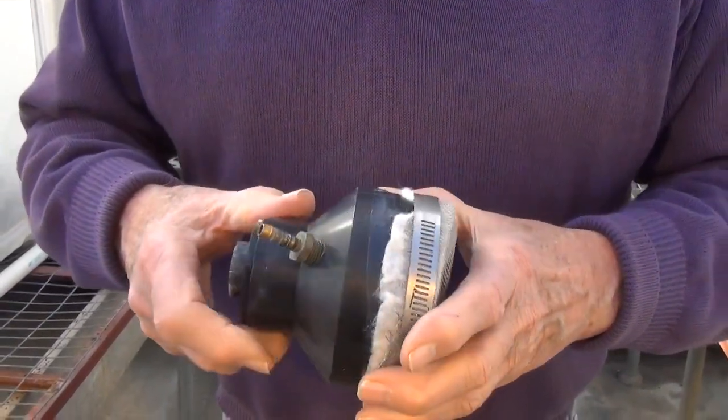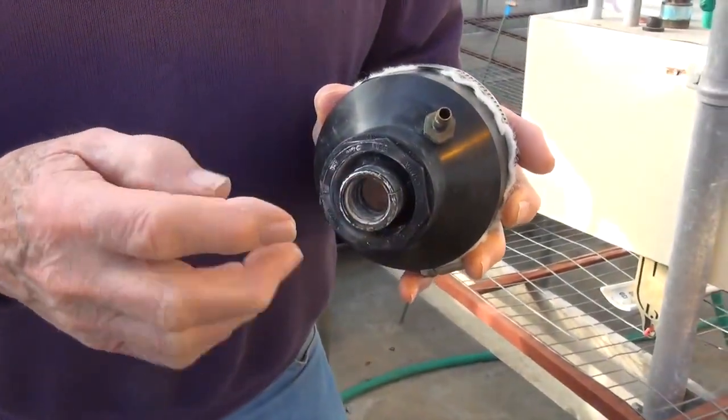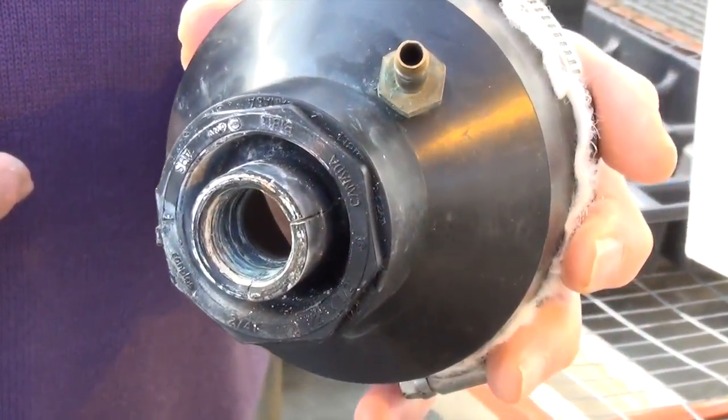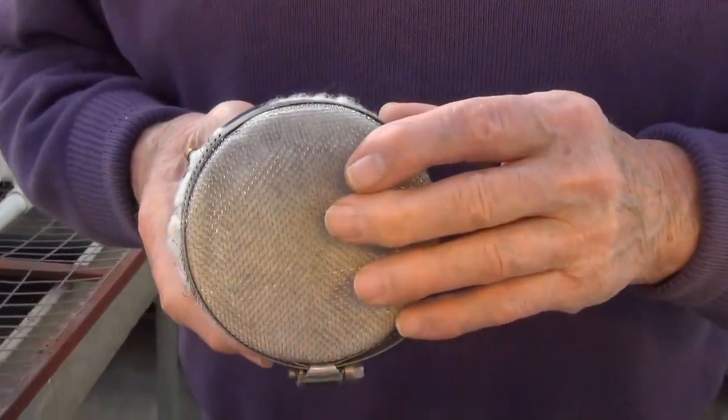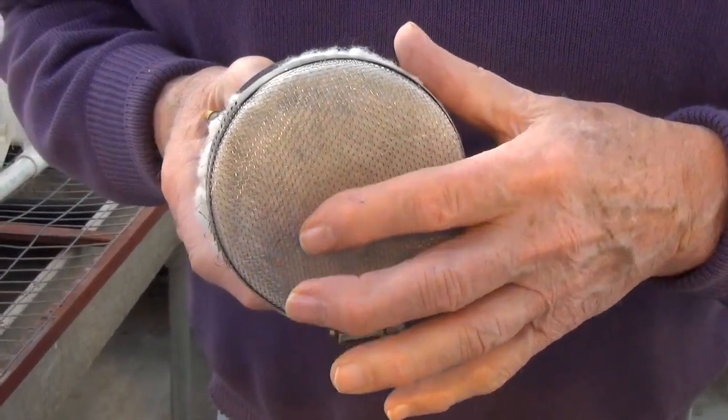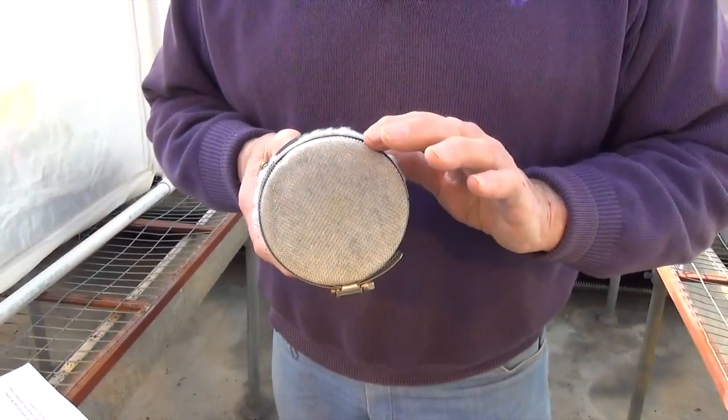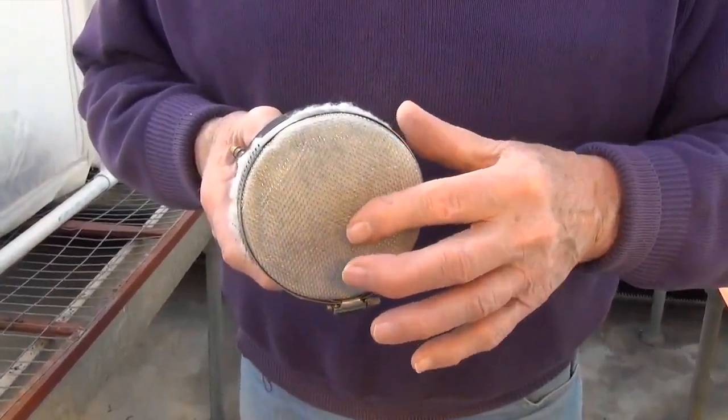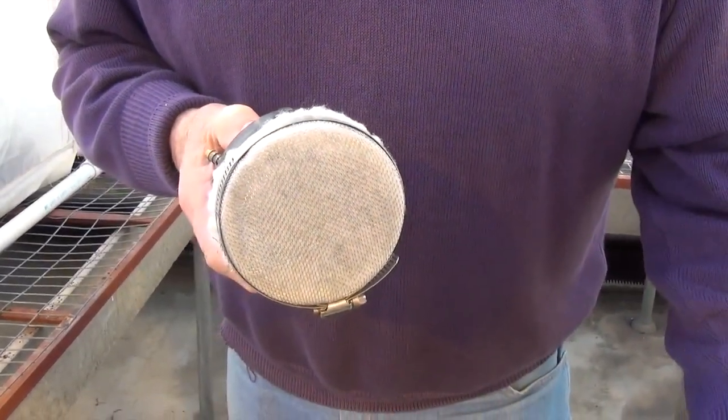Air is forced through this opening here into the foam generator, and through the filter at the end. This filter is saturated with soap solution. And as the air passes through, tiny soap bubbles are produced and they stream out the end of the foam generator.